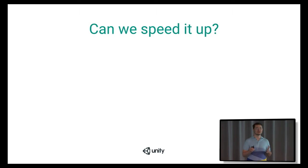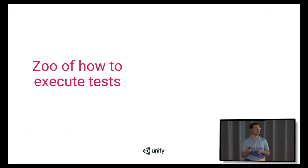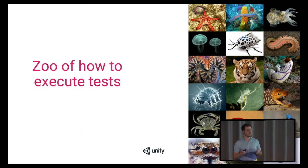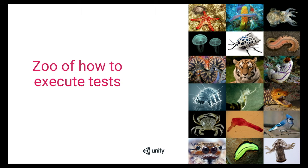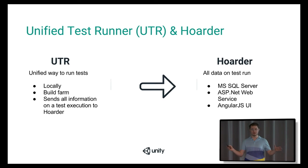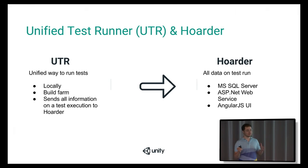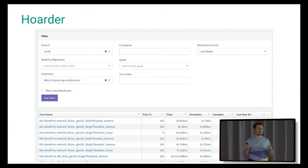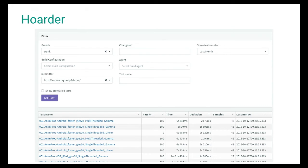We asked ourselves if we can speed it up. But before doing that, we had to fix a problem with the ways to run tests. We used to have a lot of different scripts for runtime tests, native tests — they were all different. So we created a tool called Unified Test Runner, which lets you run tests in a unified way, either on your local machine or on a build farm. As a last step, it sends all the data to a database we created called Hoarder, which has statistics on all tests — pass rate, median time — and we know everything about our tests and their full history.